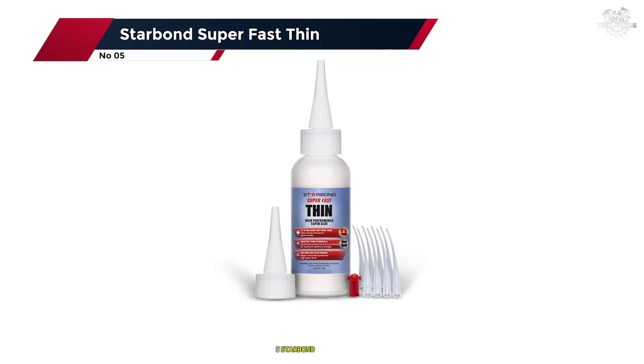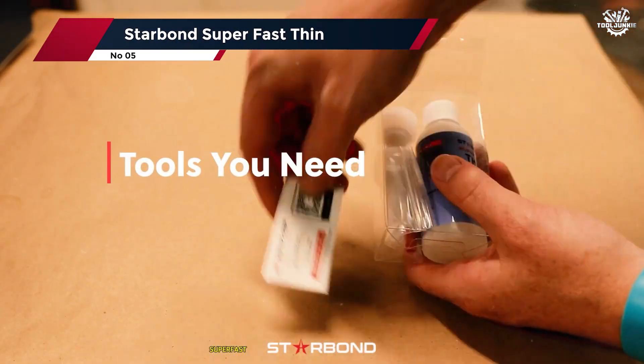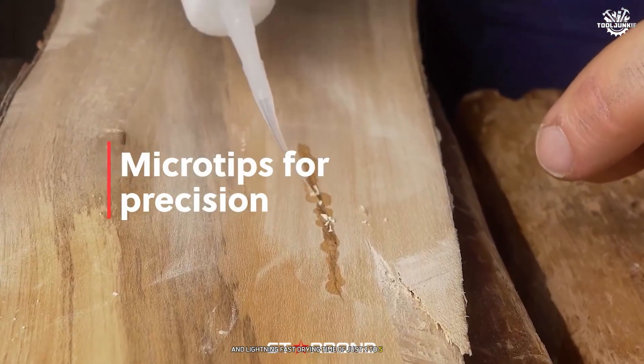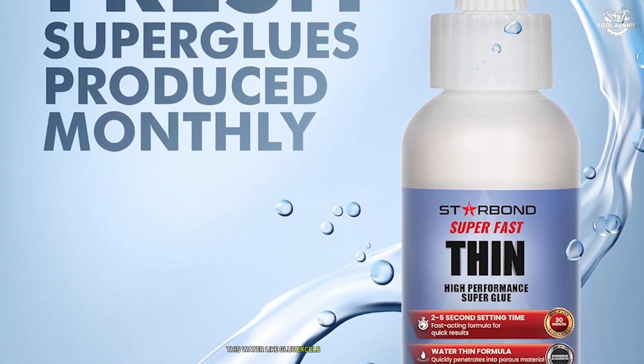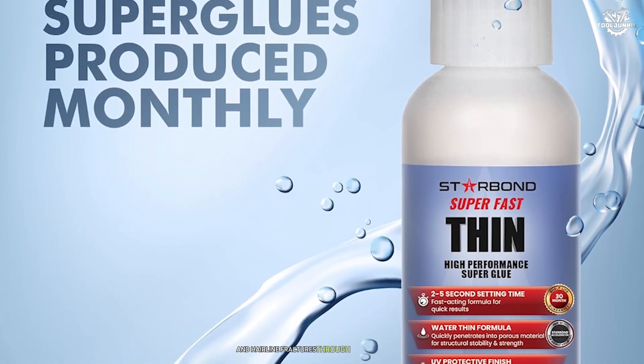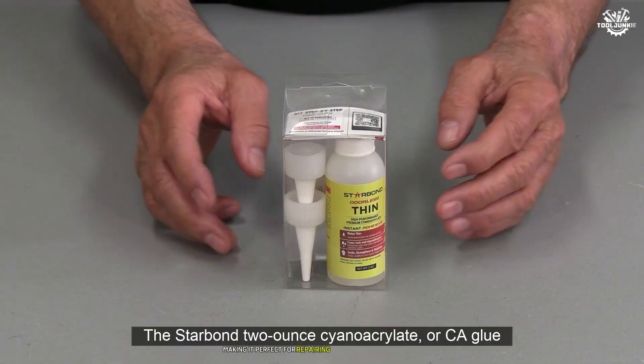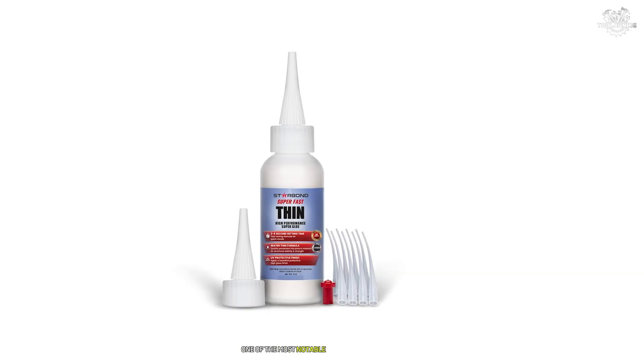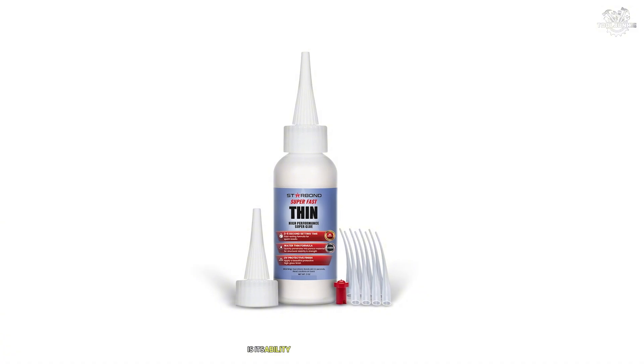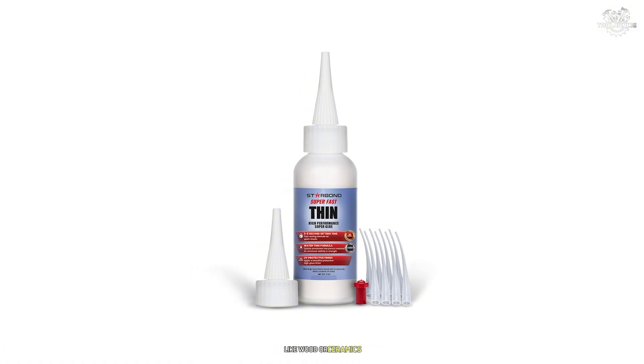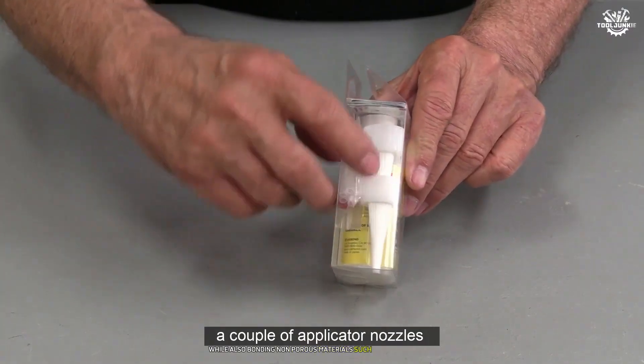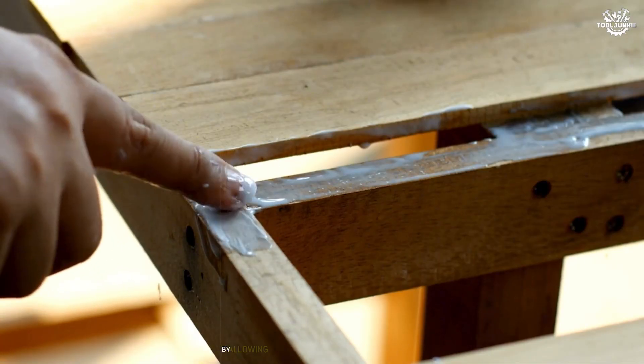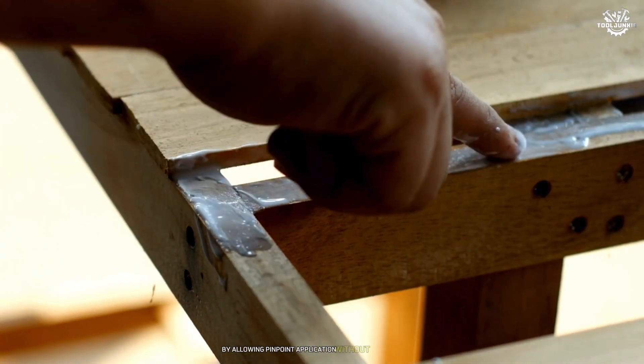Number 5. Starbond Superfast Thin. The Starbond Superfast Thin adhesive stands out with its ultra-thin viscosity and lightning-fast drying time of just 2 to 5 seconds. This water-like glue excels at wicking into tight spaces and hairline fractures through capillary action, making it perfect for repairing fine details on PLA models or stabilizing fragile parts. One of the most notable features of Starbond is its ability to penetrate porous surfaces like wood or ceramics while also bonding non-porous materials such as PLA effectively. The precision tips included in the package further enhance its usability by allowing pinpoint application without creating a mess.